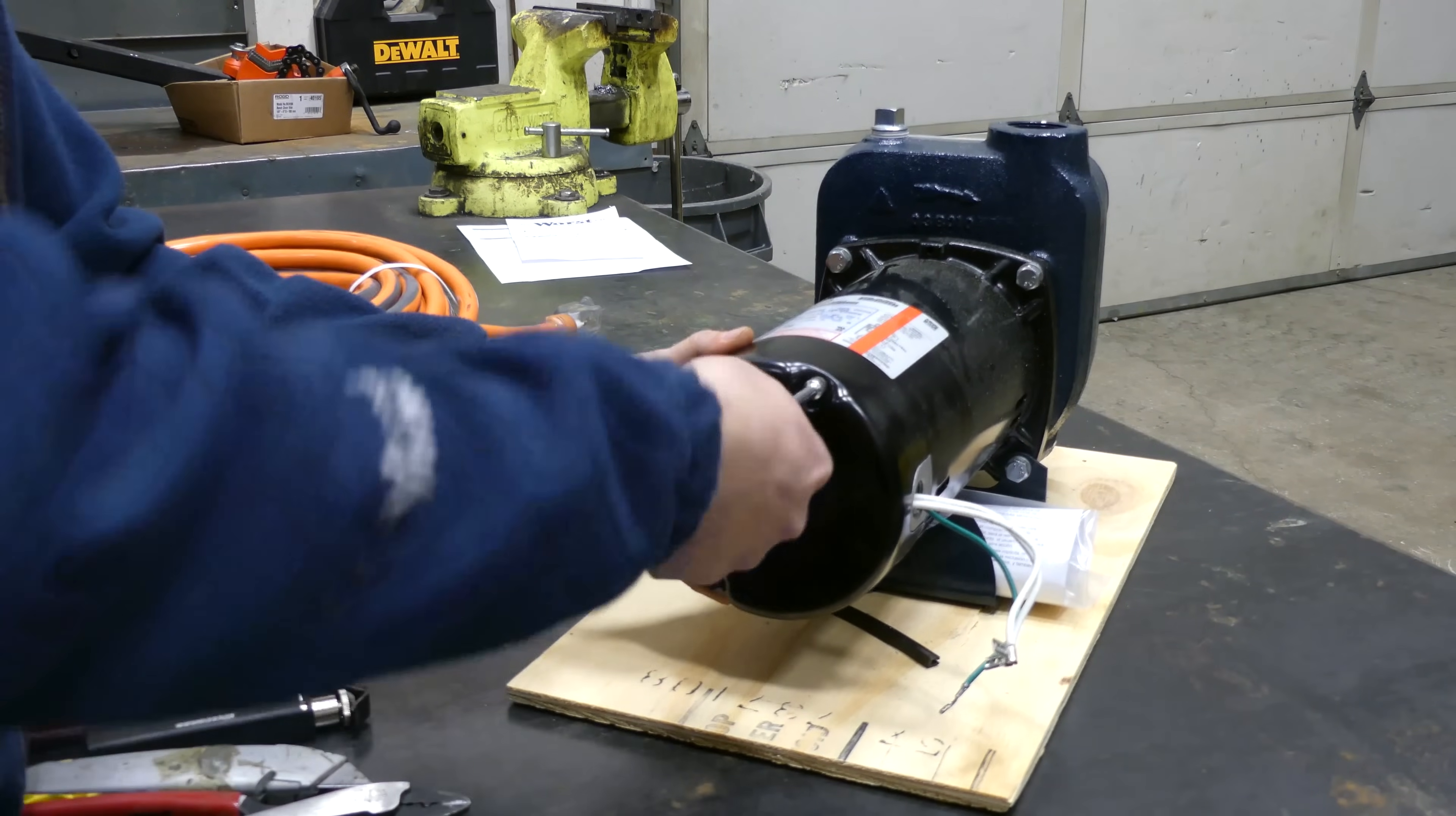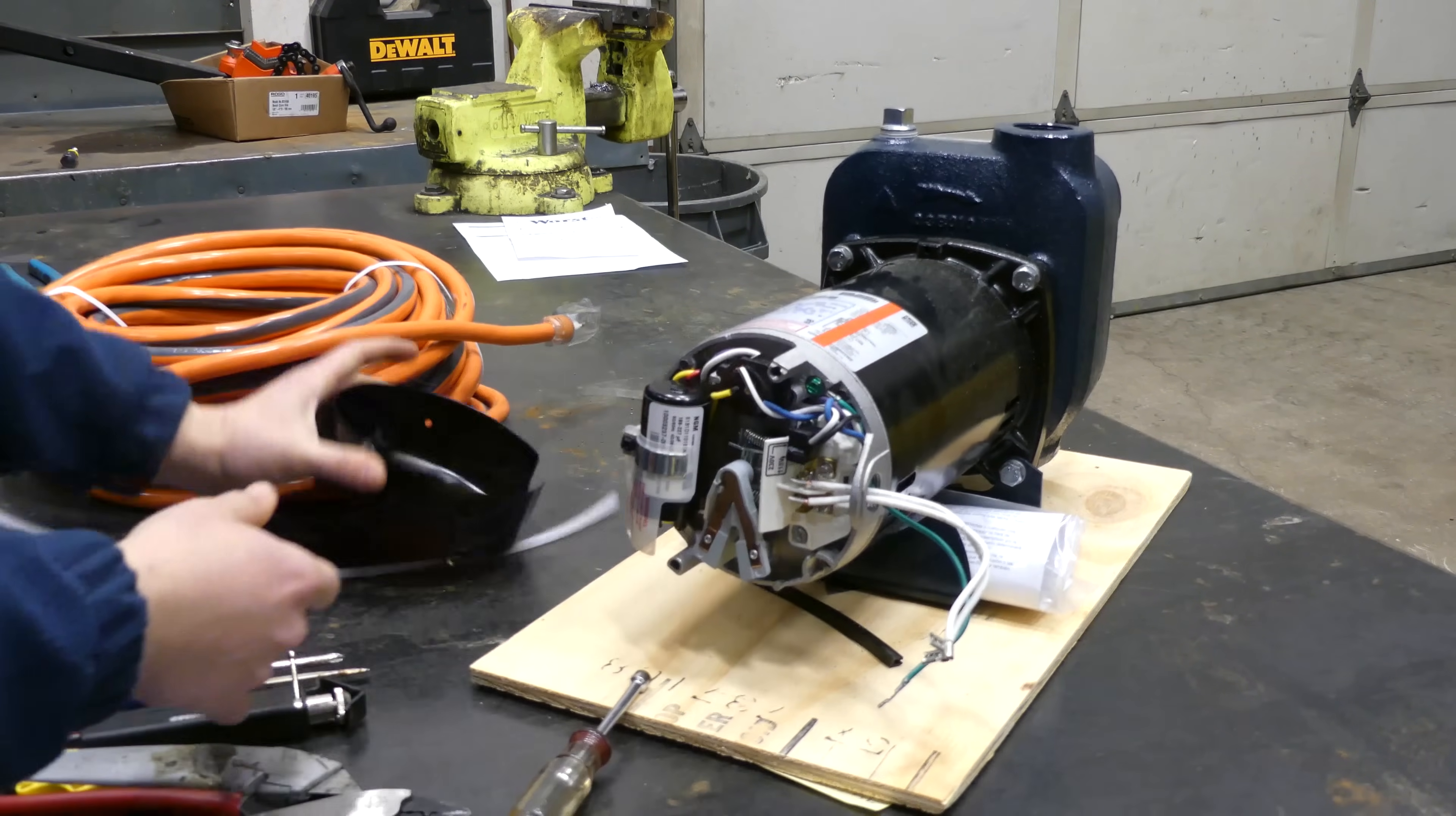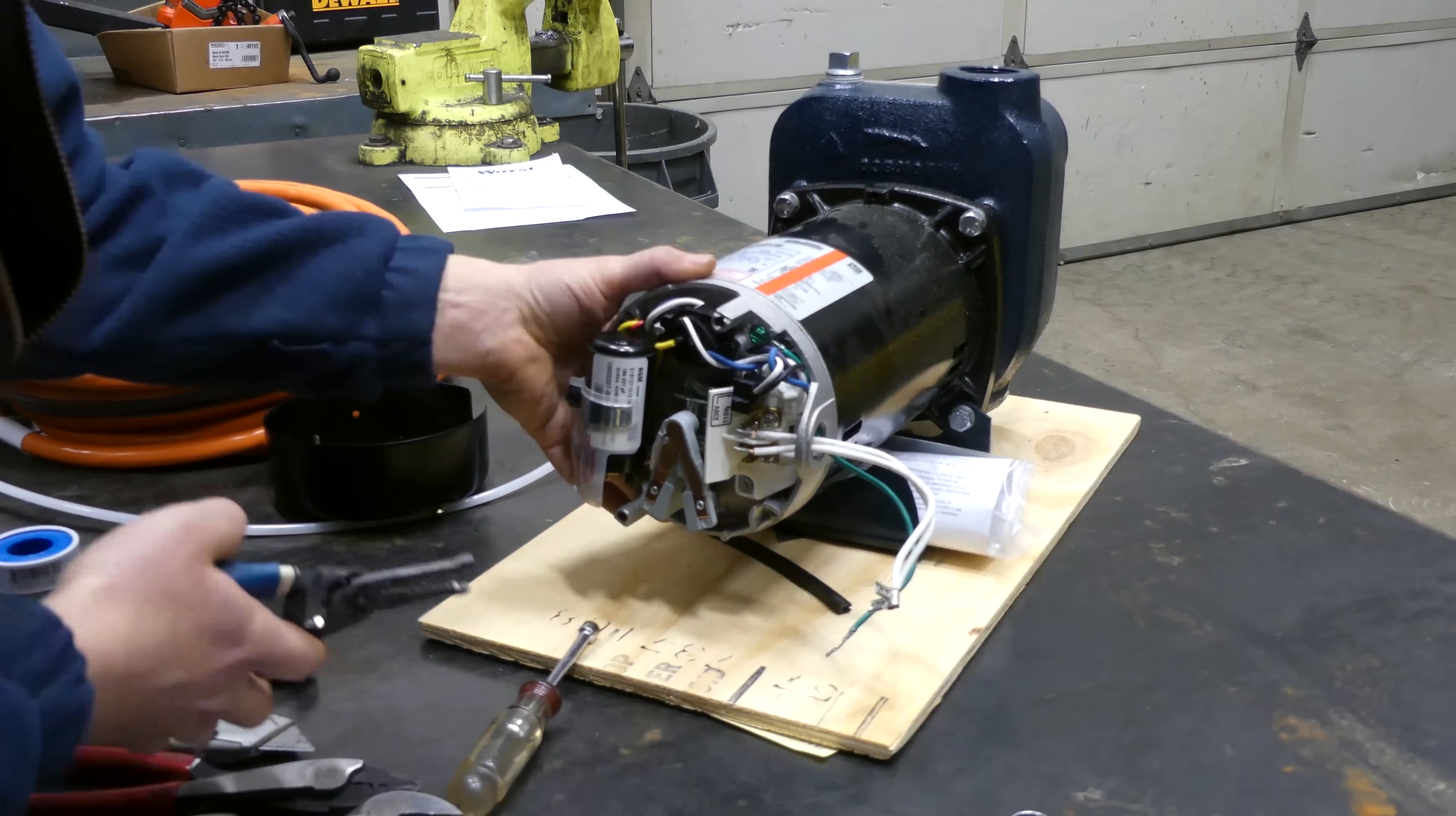The first thing that we're going to do here is just make sure that this pump's voltage is set correctly. So to do that, on most of these pumps, you just take this back plate off. So it looks like this one has the type of switch that you pull it off and put it back on. It should make sense after you see me do it.